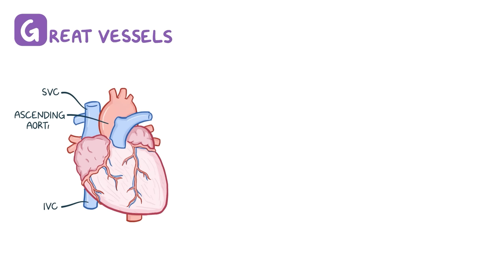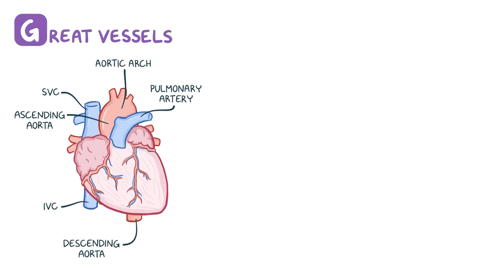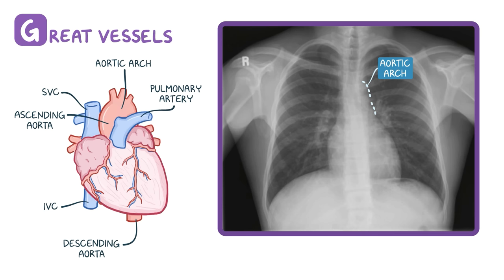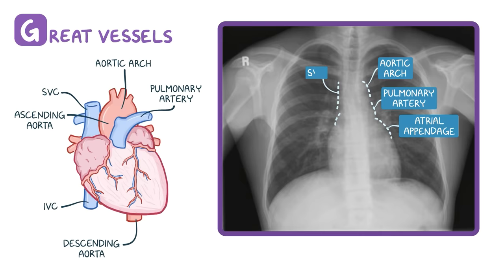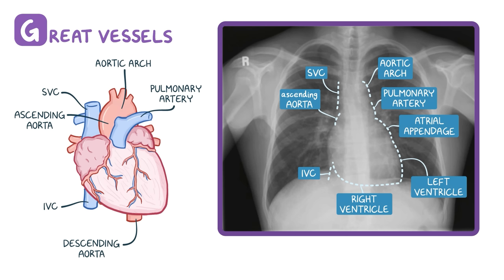Lastly, G is for great vessels, which includes the superior vena cava, inferior vena cava, ascending aorta, aortic arch, pulmonary artery, and descending aorta. You want to make sure that all of these structures are in the right location and are the right size. On the left side of the heart, the aortic arch should be the highest up, followed by the pulmonary artery. Of note, since the heart is three-dimensional, the atrial appendage actually sits behind the central formation in a frontal x-ray. On the right side, the superior vena cava, ascending aorta, right ventricle, left ventricle, and inferior vena cava should all be visible. Deviation may be the result of congenital abnormality or disease.